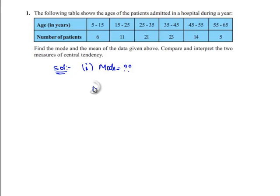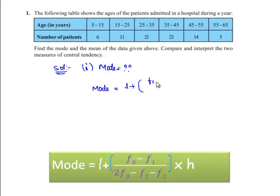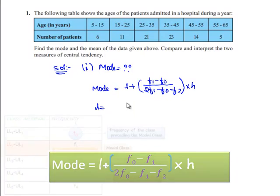It is formulated as L plus F1 minus F0 by 2F1 minus F0 minus F2 whole bracket into H.